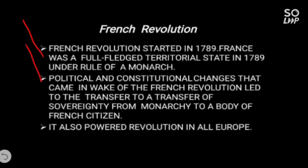Political and constitutional changes that came in the wake of the French Revolution led to the transfer of sovereignty from a monarchy to a body of French citizens. A national assembly was created and power was given to it by the French people. This also powered revolution all across Europe, and every country was influenced and wanted its own constitution.